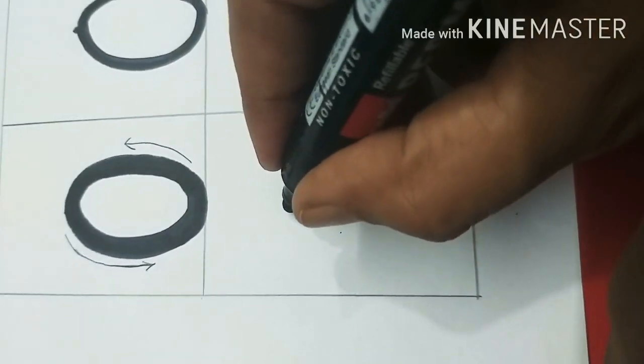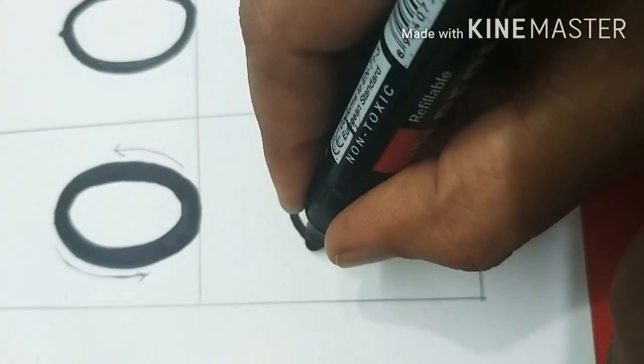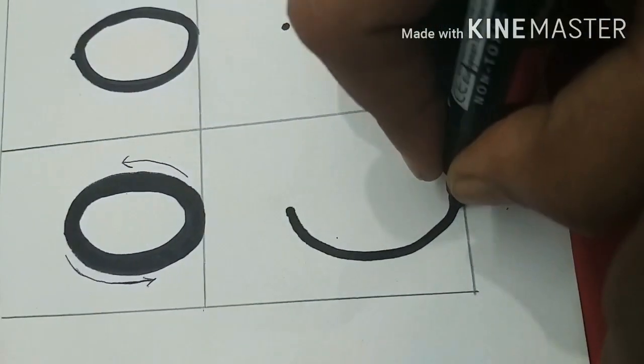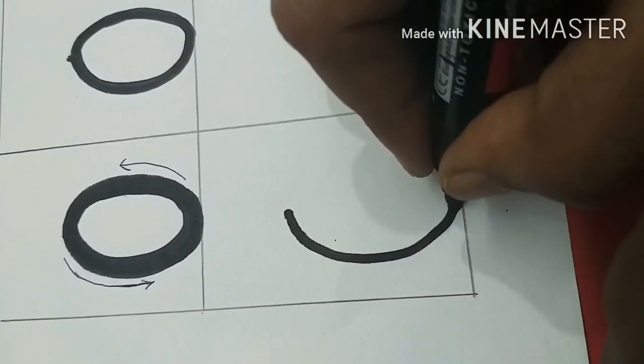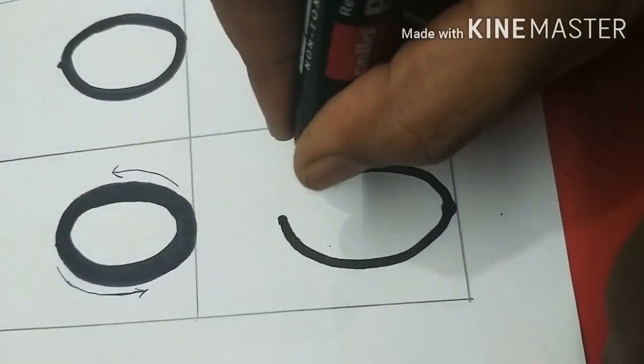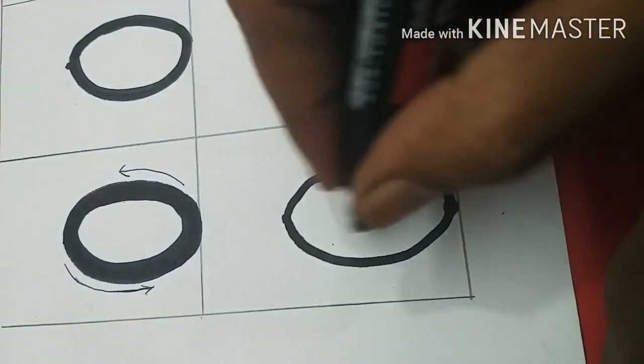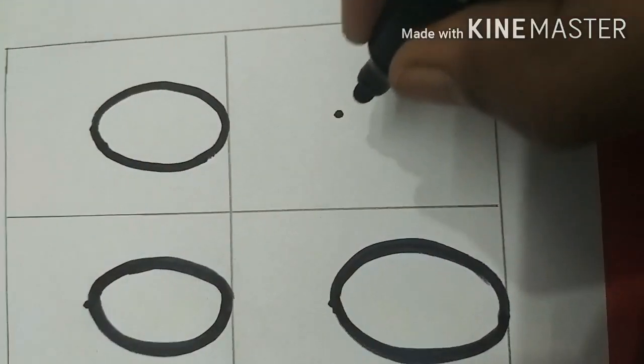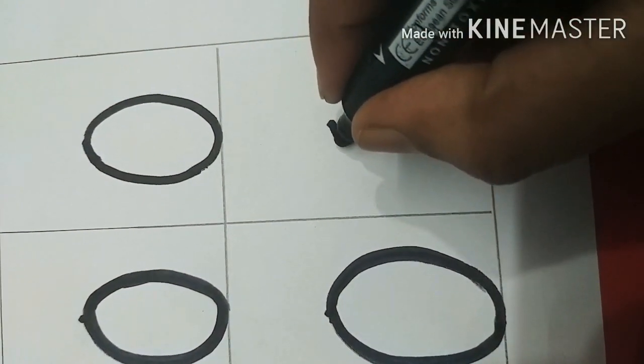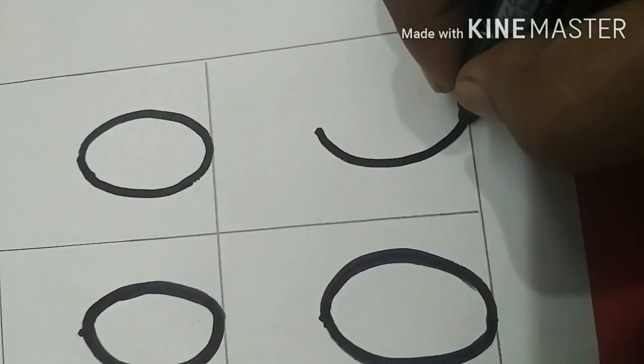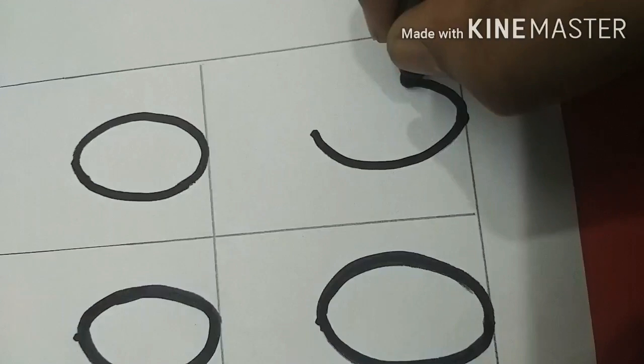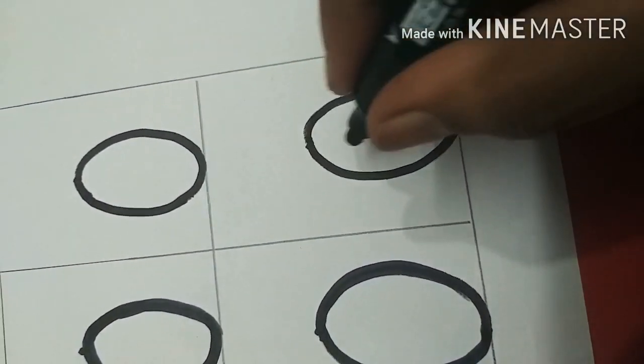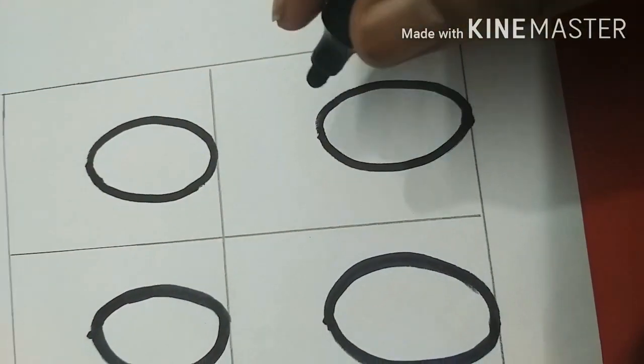Number zero. Again we will write. Start at the top, curve around, go all the way around. Very nice, good job, very good. No straight line. We will use, again, make number zero. Very good. It's very easy to write kids. Round, round, zero. It's number zero.